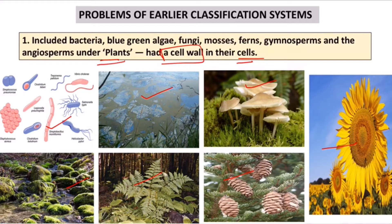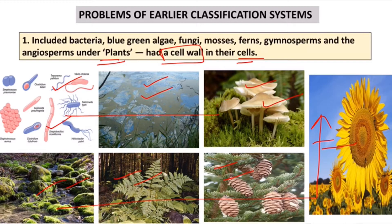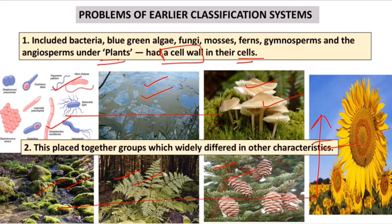And if an organism did not have a cell wall, it would be included in the animal group. But bacteria have totally different characteristics — they are different from fungi, different from mosses, ferns, gymnosperms, and angiosperms. So how can we include them all in one group? This was the second problem: these organisms were placed in one group but were widely differing in their characteristics.